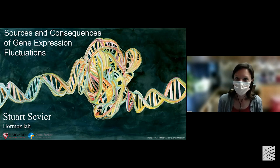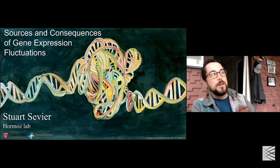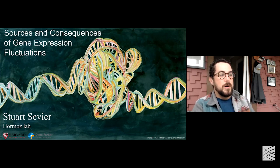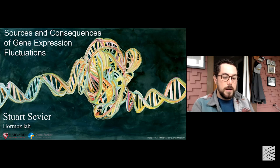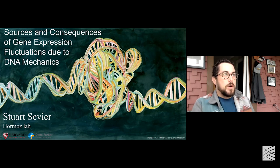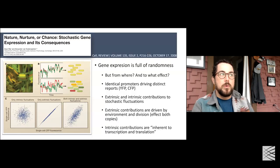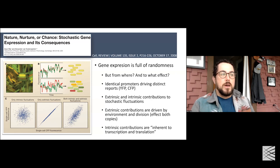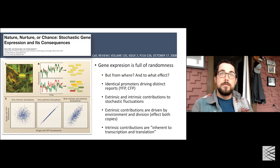Thanks. The title up there is 'Sources and Consequences of Gene Expression Fluctuations,' which might bring to mind a lot of things to a lot of different people. A more specific and accurate title for what I'm going to talk about is 'Sources and Consequences Due to DNA Mechanics.' I wanted to start at the classic starting point for talking about gene expression fluctuations — understanding the drivers and consequences of changing levels of RNA and proteins inside of cells: where they come from, how they persist, and if they have any consequences.